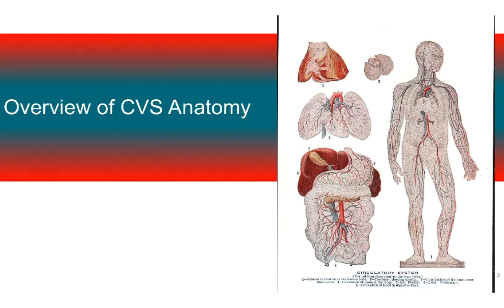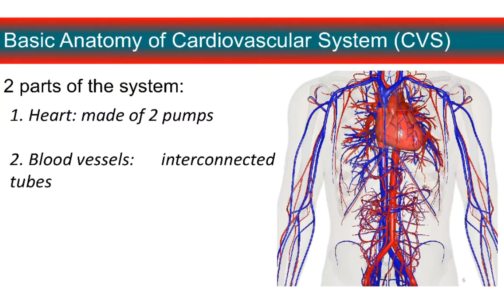So we're going to start with an overview of the blood vessels and the heart, and then we'll jump into the path that blood follows through the body. Basic anatomy: you've got two parts of the heart, which is made of two pumps whose action is synchronized, and then the blood vessels, which are a set of interconnected pipes.